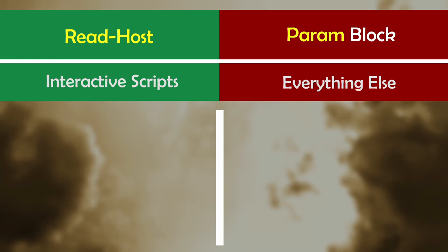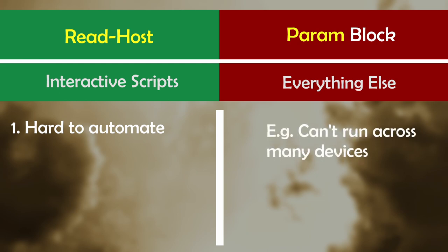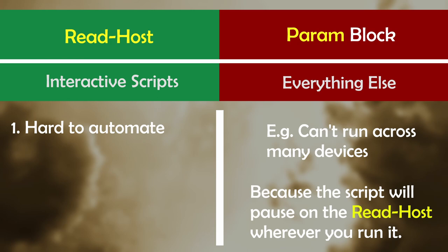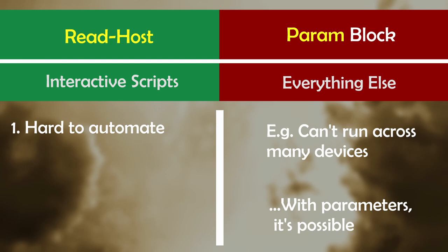The first reason you might want to use parameters instead of Read-Host is that Read-Host makes it really hard to automate the running of your script. Imagine you write a script and the person using it wants to run that script across thousands of computers all at once. Well, if you have a Read-Host in it, they can't do that, because the script will literally pause itself and wait for an input on every single PC. Maybe you can hack around that by emulating key presses or something ridiculous, but that's just silly. Putting Read-Host in our scripts makes them very hard to automate, and PowerShell is all about automation.